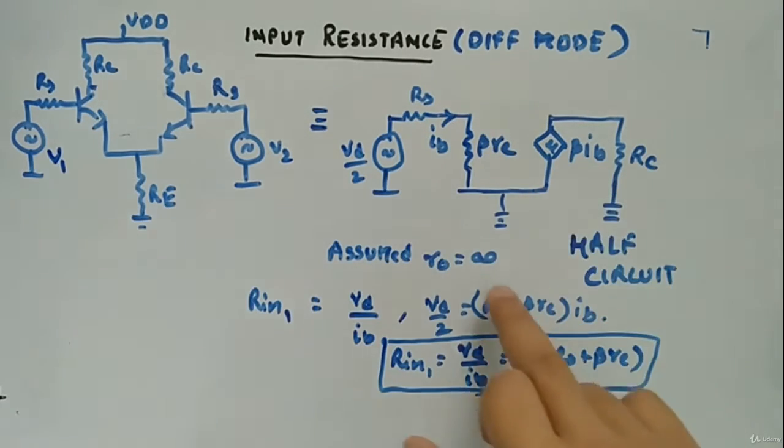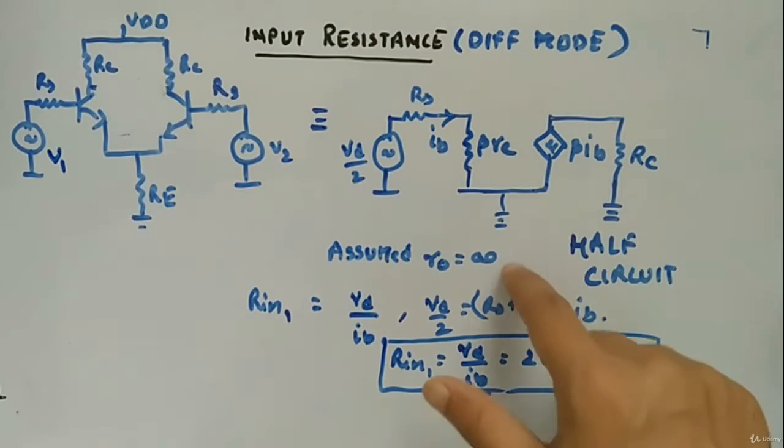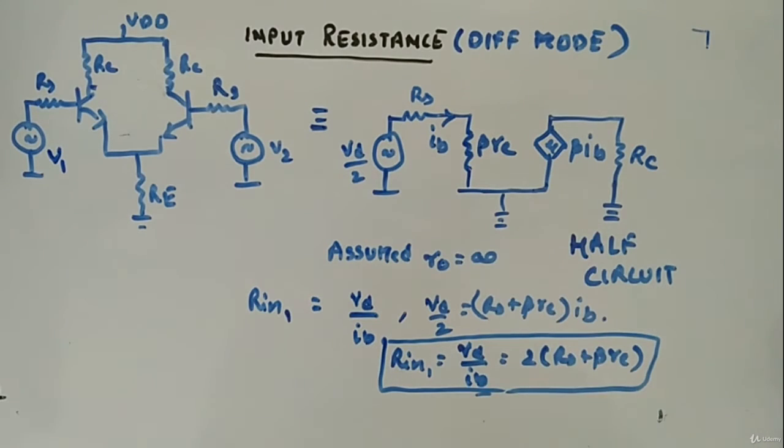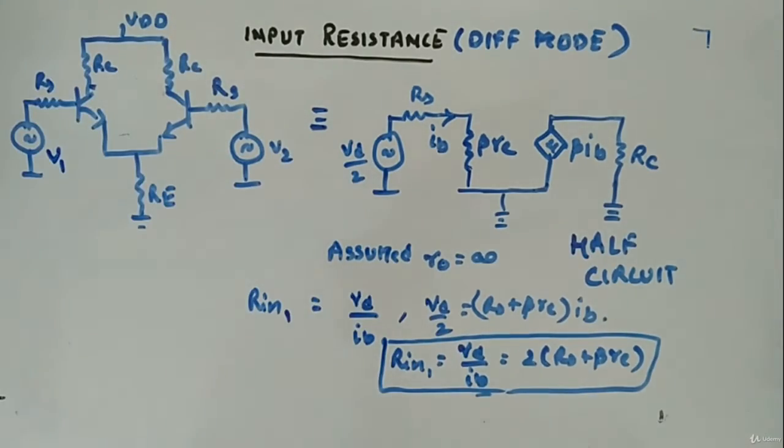beta Re, beta Ib, R0 I have assumed to be infinite because mostly R0 will be infinite, will be valid 99% of the time. RC is there, this RC, and I have made the half circuit.